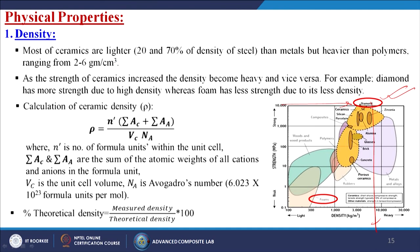The ceramic density formula is: ρ = N′(ΣAC + ΣAA) / (VC · NA), where N′ is the number of formula units within the unit cell, ΣAC and ΣAA are the sums of atomic weights of all cations and anions, VC is the unit cell volume, and NA is Avogadro's number (6.023 × 10²³ formula units per mole). Percentage theoretical density is calculated as (measured density / theoretical density) × 100.